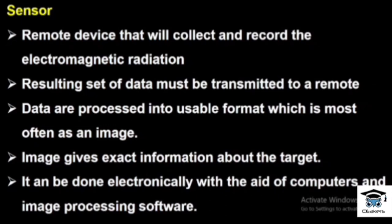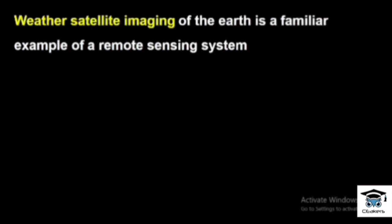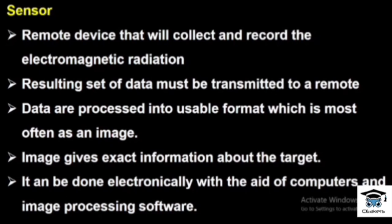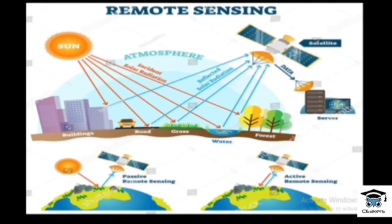An application for remote sensing is weather satellite imaging of the Earth — a familiar remote sensing system. The energy source has radiation. There are different objects such as buildings, roads, grass, vegetation, water, and forests. If radiation reflects off one of these objects, you can detect the electromagnetic radiation using a sensor or a satellite.